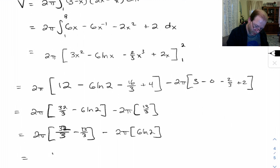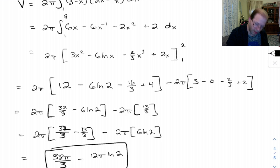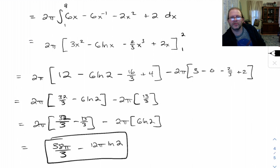I'm doing this to get an exact answer. 32 over 3 minus 13 over 3 equals 19 over 3 times 2. This is 38 pi over 3 minus 12 pi ln 2. Yeah, that's the answer I get. That's an exact answer, but it's ugly. Let's get an approximation. 38 pi over 3 minus 12 pi ln 2 gives me 13.66.